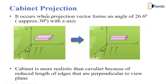Second is the cabinet projection. In this, it makes an angle of approximately 30 degrees, or 26.6 degrees, along with the z-axis. Cabinet projection is more realistic than cavalier because of the reduced length of edges that are perpendicular to the view plane. After making an angle of 30 degrees, the projected object on the view plane will look like this.